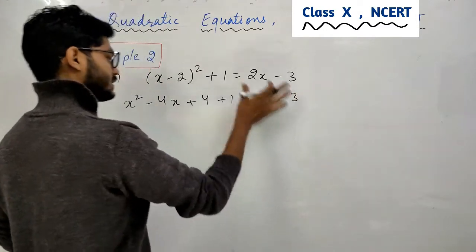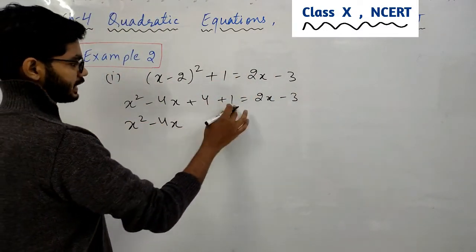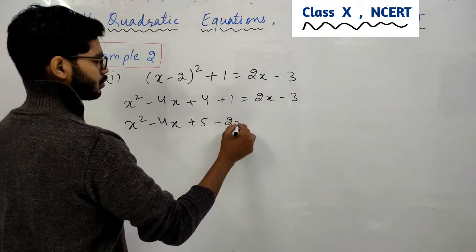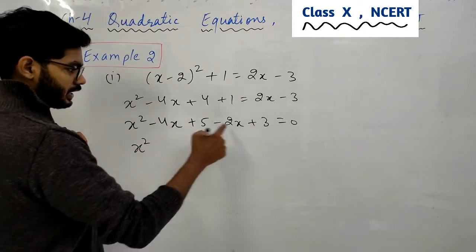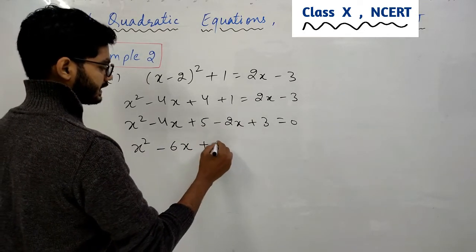Now you have to write. So x² - 4x in the two of you add to 5 will be 5, so x² - 4x + 4 + 1 = 8x - 3. Minus 2x plus 3 equals to 0. X square, in the two of you, you will get 6x. This will get 8.